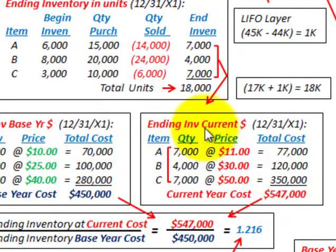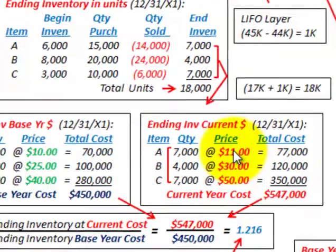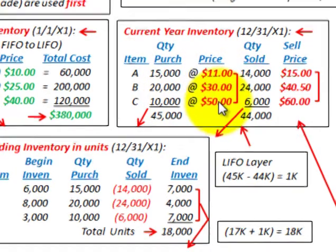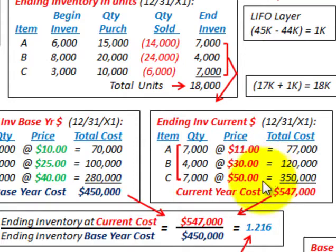Then we calculate ending inventory in current year dollars as of 12/31/X1. We take the same ending inventory quantities and multiply by the current year purchase prices. For item A: 7,000 × $11 = $77,000. Doing that for items B and C and summing the totals gives a current year cost of $547,000.